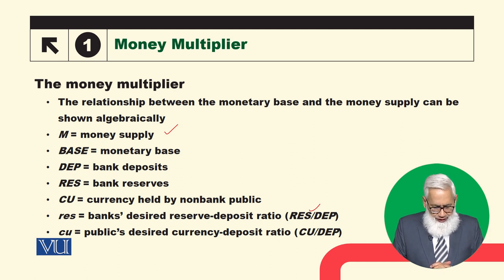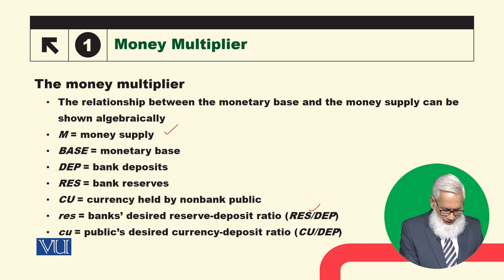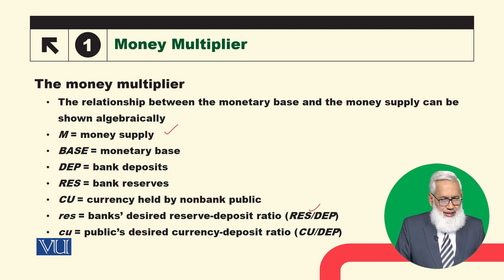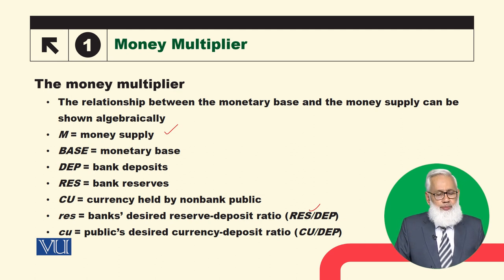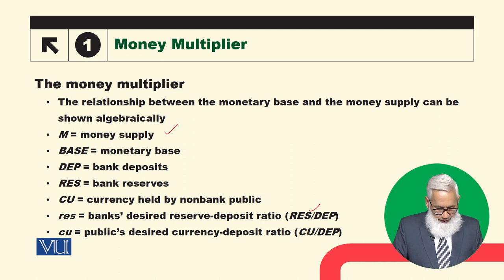The relationship between the Monetary Base and the Money Supply can be shown algebraically. Let's see some notation. We will use notation for Money Supply, for DEP — Bank Deposits, for R.E.S. — Bank Reserves, and for C.U. — Currency held by the Non-Bank Public.